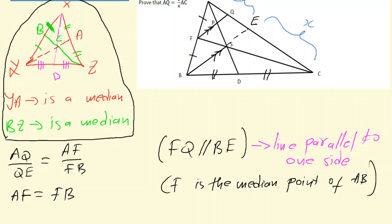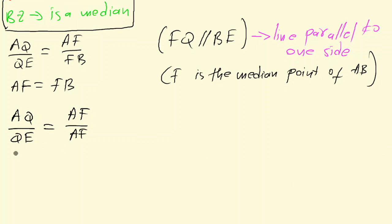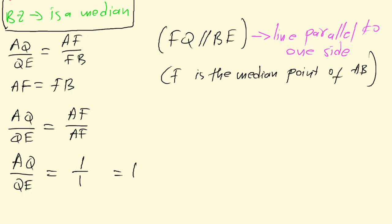Now that we know this information, we can substitute it into the first statement: AQ over QE equals AF over FB. Since AF equals FB, we can write AF over AF, which equals one over one — because AF goes into AF exactly once. So AQ over QE equals 1, or simply one over one, whichever you prefer.